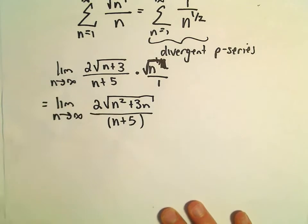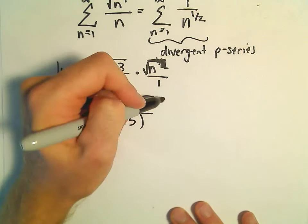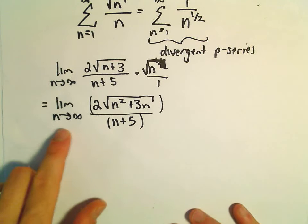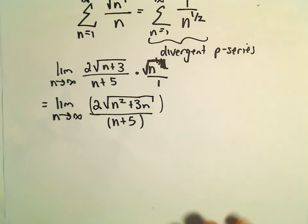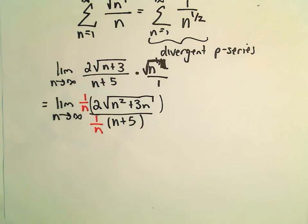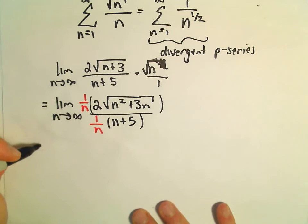Or what we can do is, I'm going to divide everything by the highest power of n that appears in the denominator. So these are kind of like limits that you see in first semester calculus, these limits at infinity. Again, equivalently, dividing by n is going to be equivalent to multiplying by 1 over n.